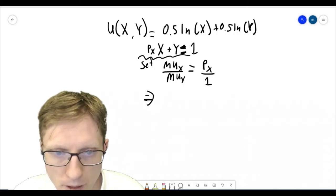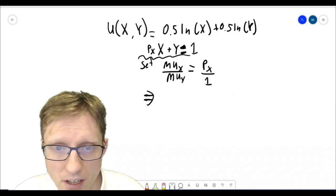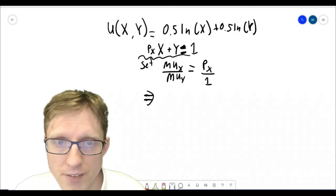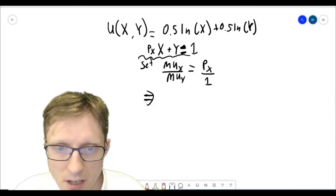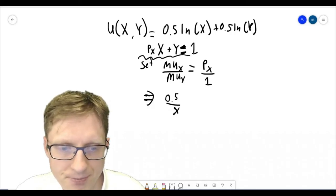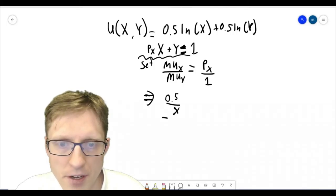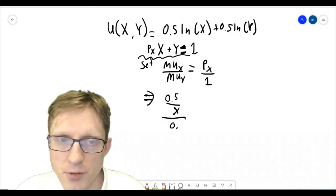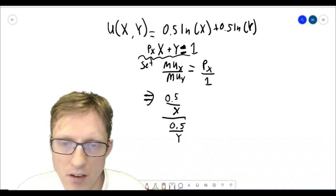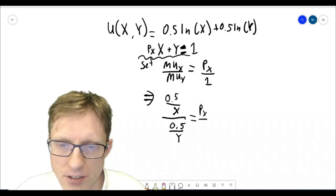Okay, so now we're going to plug in what the marginal utilities are by taking the derivative. So the marginal utility of good x is the partial derivative of the utility function with respect to x, which is just 0.5 over x. Okay, so this part that I've written so far is the marginal utility of x. And then we're going to divide it by the marginal utility of y, which in this problem, take the partial derivative of the utility function with respect to y, becomes 0.5 over y. And again, that's equal to the price of x over 1.